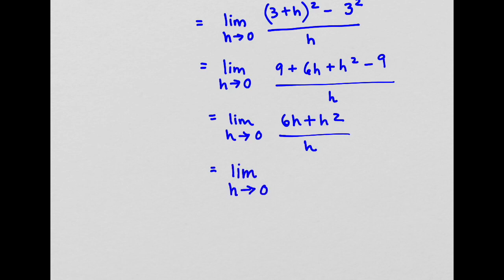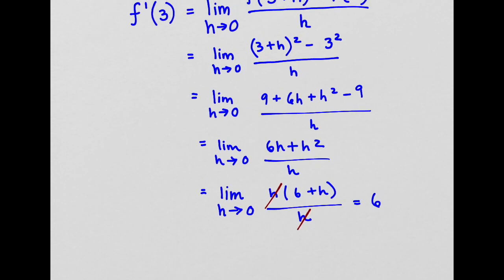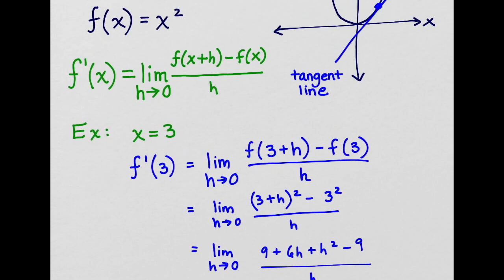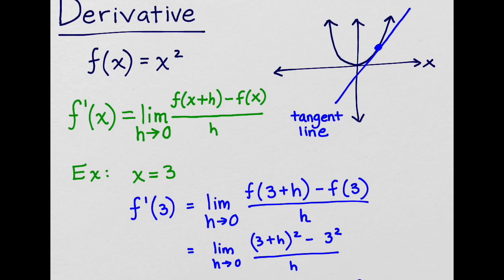Now let's take the limit as h approaches 0. The 6h plus h squared over h equation simplifies to just 6. Therefore, the derivative of f of x equals x squared at x equals 3 is 6.